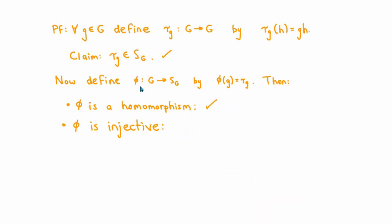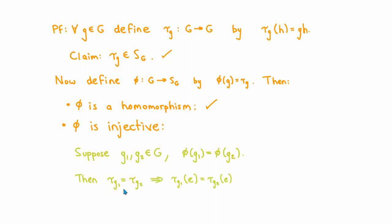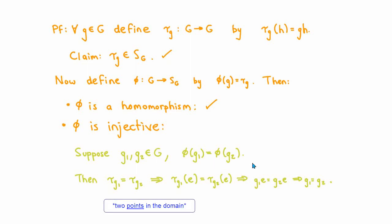The next thing to show is that φ is also injective. Suppose g₁ and g₂ are two elements of the domain which get mapped by φ to the same point in the codomain. By the definition of φ, that means the maps τ_{g₁} and τ_{g₂} are the same. In particular, these maps must send the identity element to the same point in G. Using the definitions of τ_{g₁} and τ_{g₂}, that means g₁ times the identity equals g₂ times the identity, so g₁ equals g₂. Therefore φ is an injective map from G to the symmetric group on G.